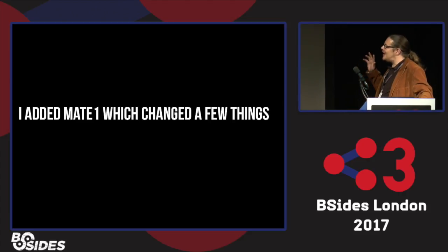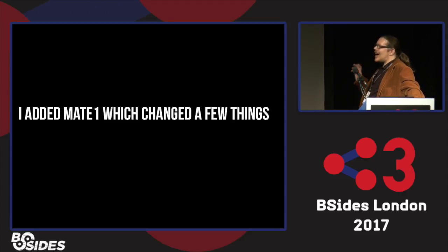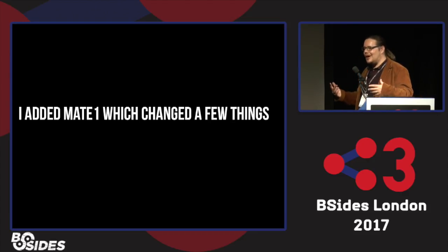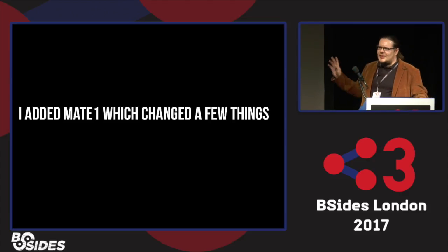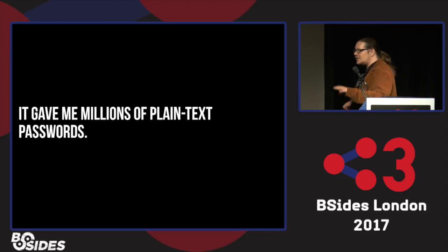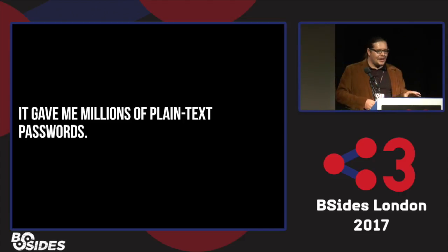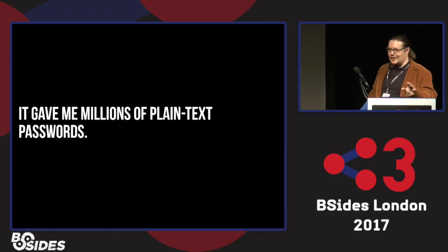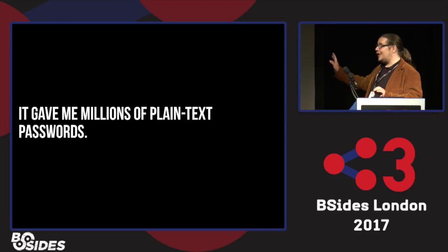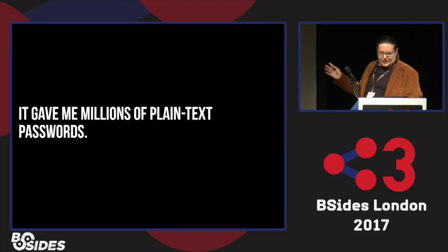Mate1 was a dating website. The difference from Ashley Madison and Adult Friend Finder is that Ashley Madison was looking for people to cheat with — though I think most people were just talking to bots if you've ever looked at the data dump. Mate1 was more like a traditional dating website. What was interesting is it gave us millions and millions of plain text passwords. Why did mate1 store passwords in plain text? I'll discuss later that it's not the worst sin in the world — they're not alone.